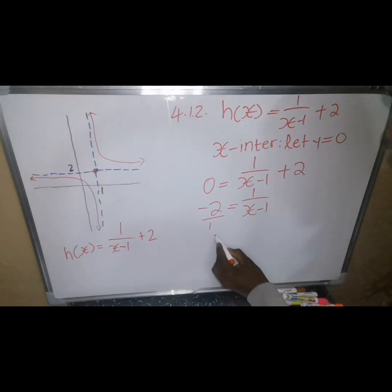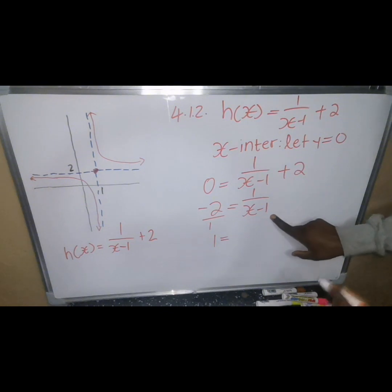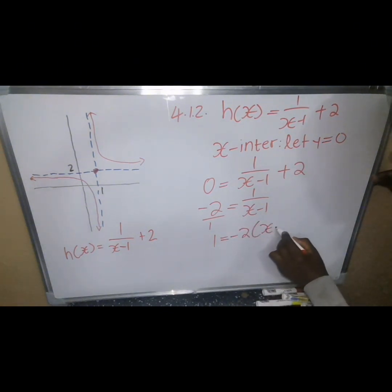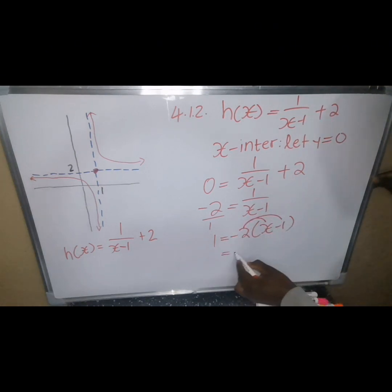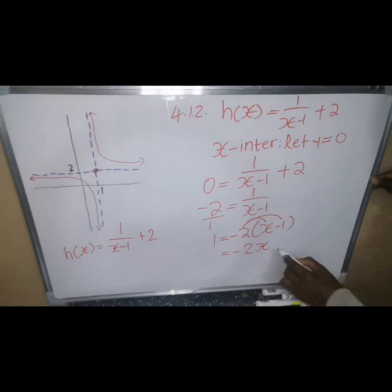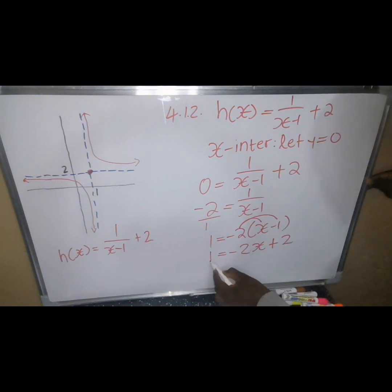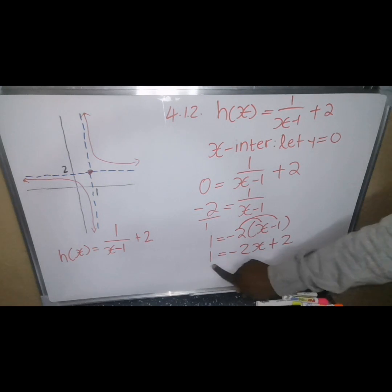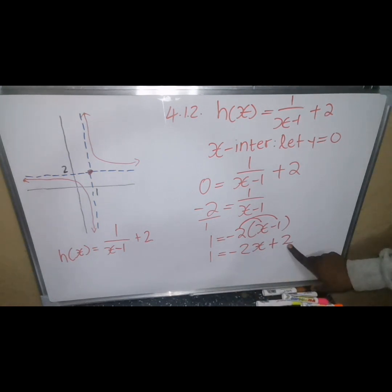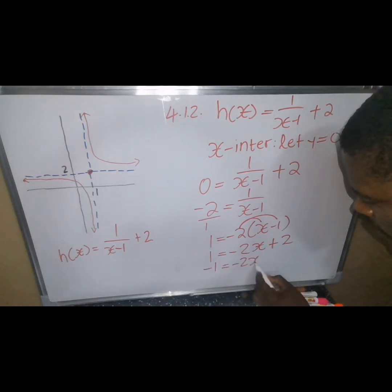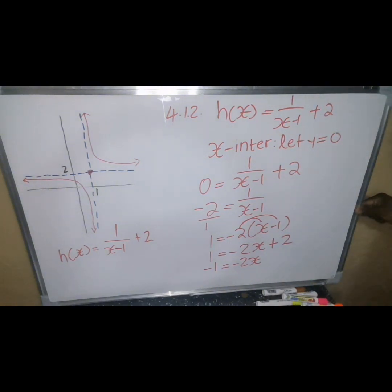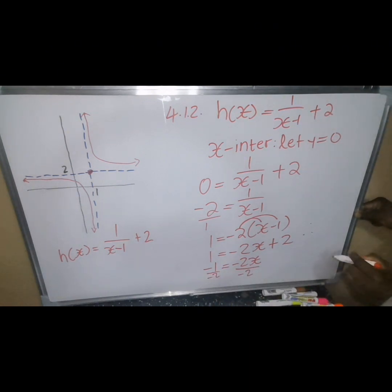To clear the fraction, we cross-multiply: negative 2 times (x − 1) equals 1. Expanding: negative 2x plus 2 equals 1. Transposing 2 to the left gives negative 1 equals negative 2x. Dividing both sides by negative 2, we get x equals one half.